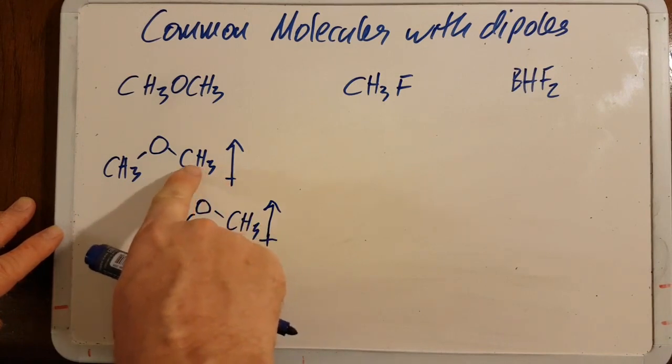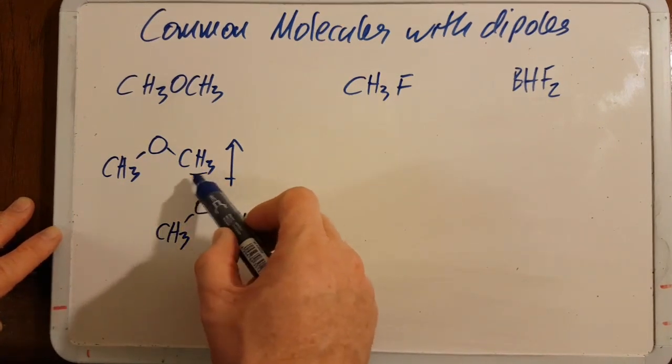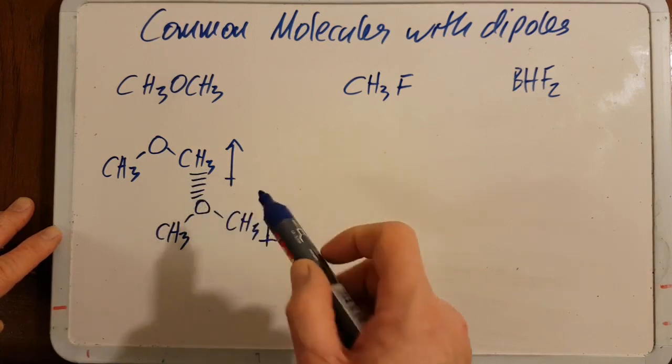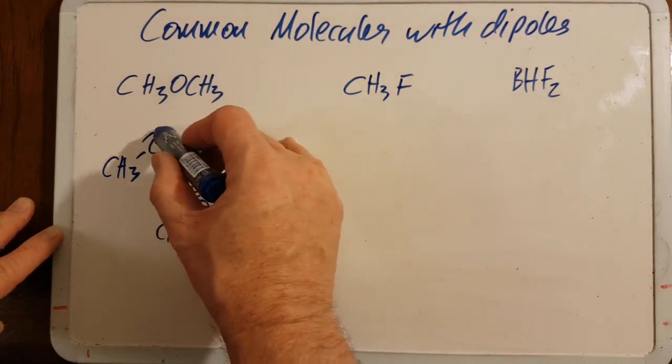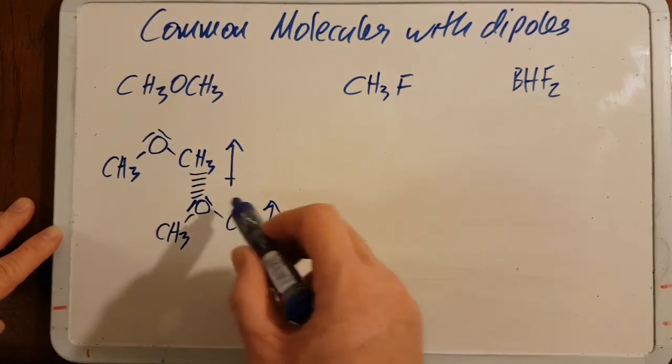The positive end of this molecule is attracted to the negative end of that molecule, so there's your dipole-dipole attraction. Why is it bent? Well, don't forget: for VSEPR theory, this oxygen has those two extra lone pairs there.